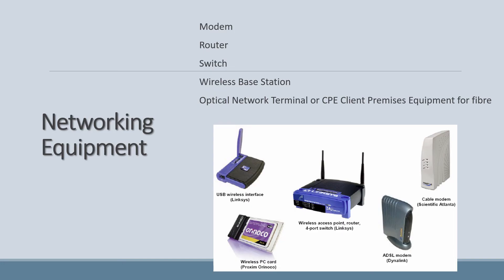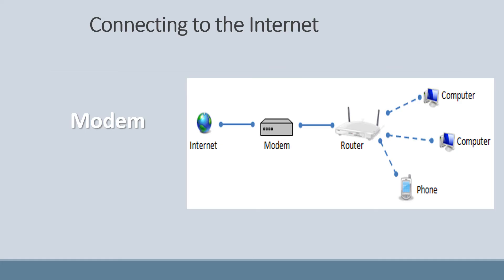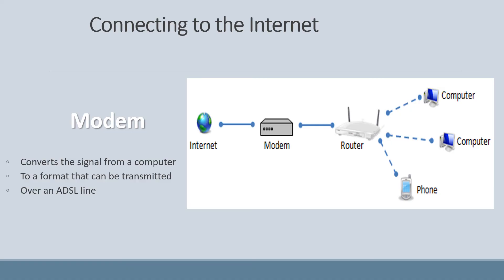To create networks you need certain equipment. These include a modem, a router, a switch, a wireless base station, and an optical network terminal or CPE — client premises equipment — which is used when you're connected via fiber. A modem converts the signal from a computer into a format that can be transmitted over an ADSL line. As shown in the picture, you need the modem to convert the signal so that you can communicate over the internet.